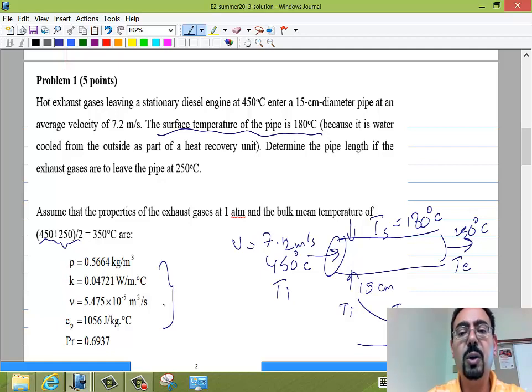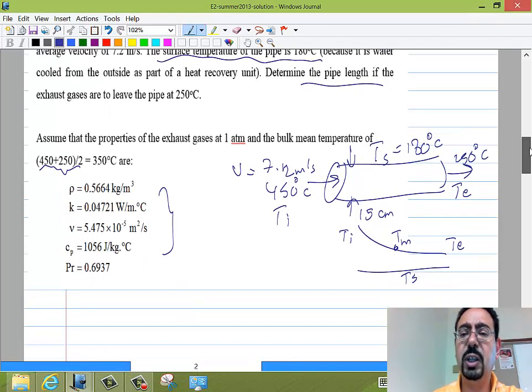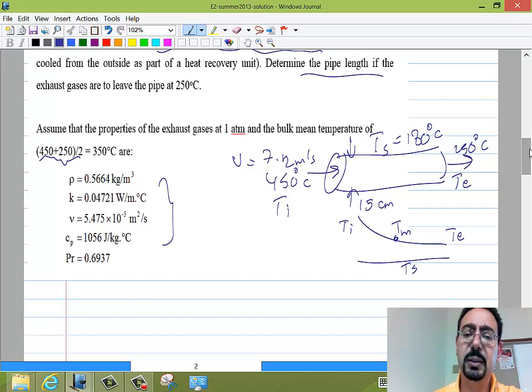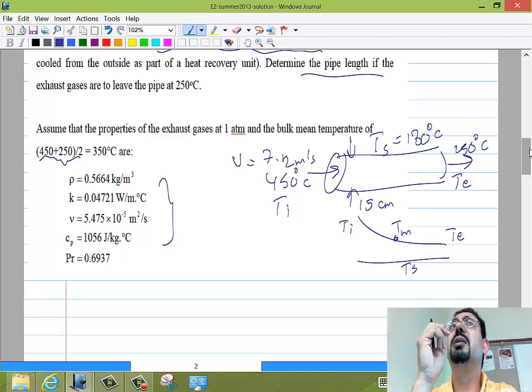So what's required? Required is determine the pipe length. So the pipe length is in the area, so he's basically asking us for the area of the pipe so that later we can say that this area is πDL and get the length out of this equation. So what equation can help us to get the area? Nusselt. Not yet. Before the Nusselt number, the equation that you should think about is Q equal H A delta T.